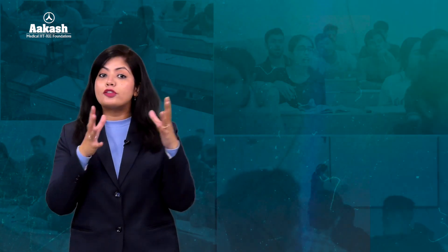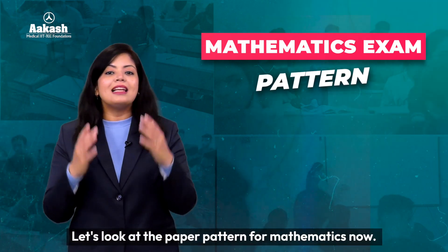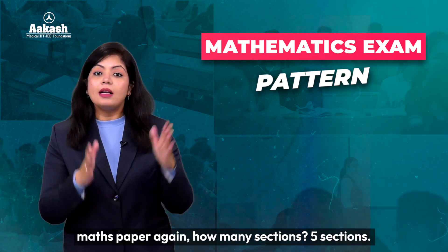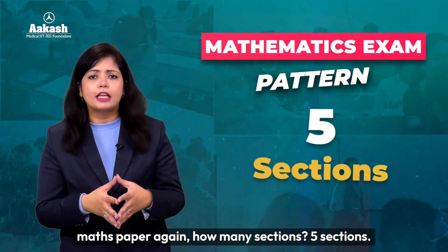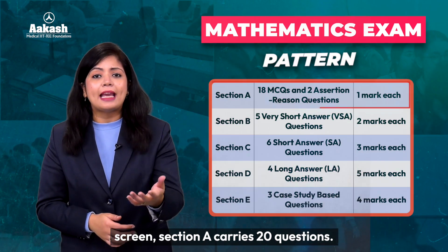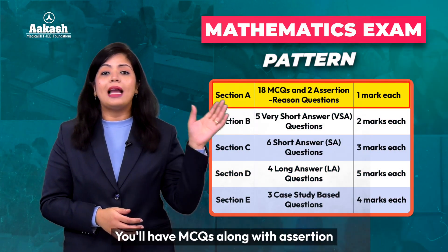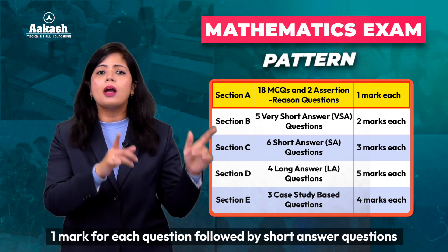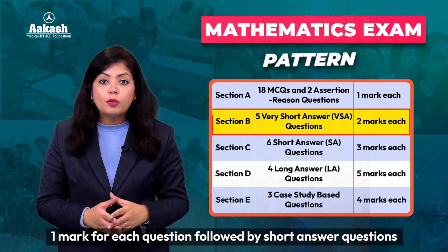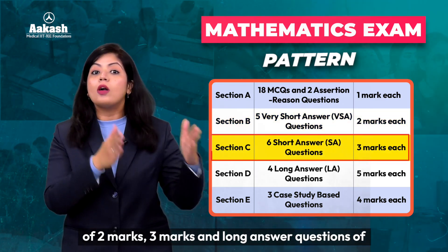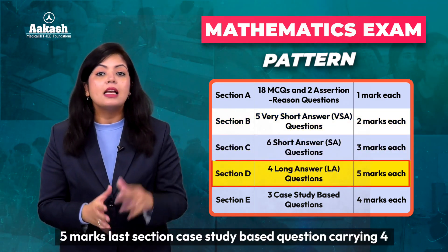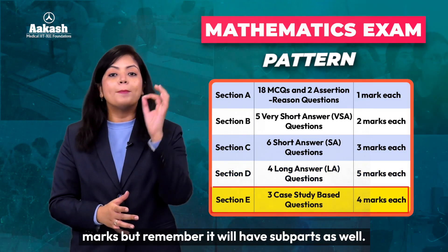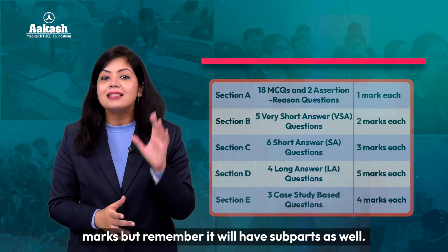So with that, we move to the next subject which is mathematics. Now if I look at the maths paper again, how many sections? Five sections. As you can see on your screen, section A carries 20 questions. You'll have MCQs along with assertion-reason questions, just like science, one mark for each question. Followed by questions of two marks, three marks, and long answer questions of five marks. The last section is a case study based question carrying four marks, and remember it will have sub-parts as well.